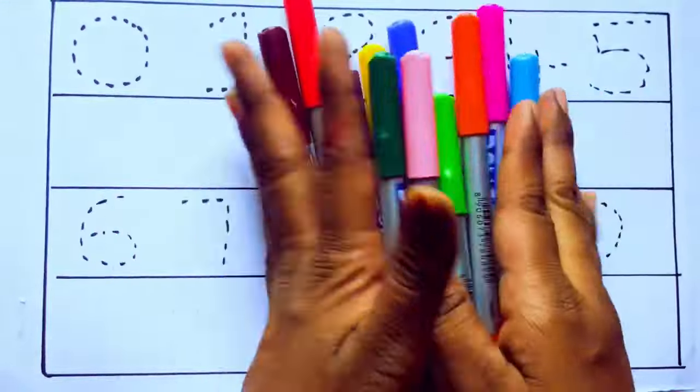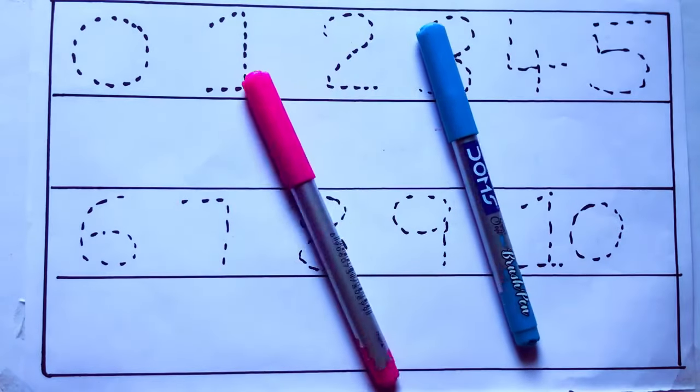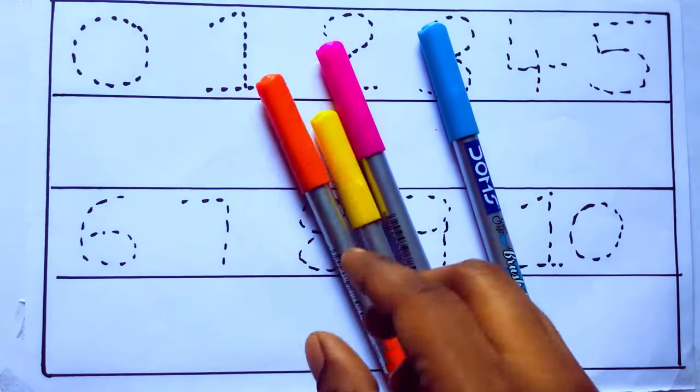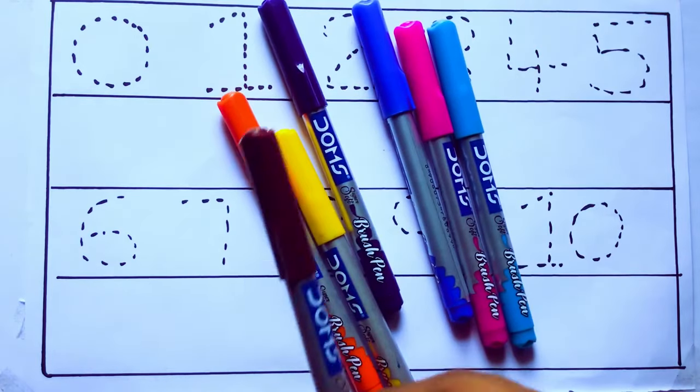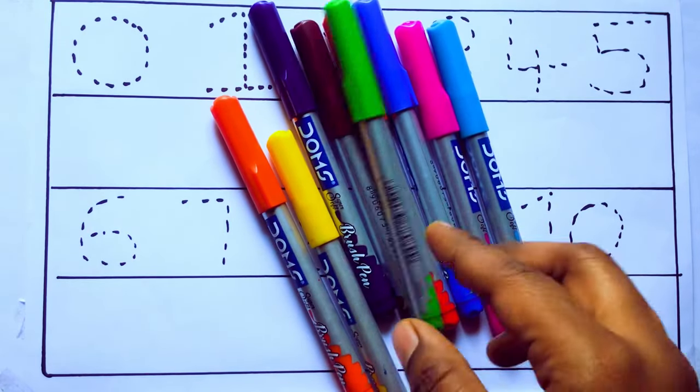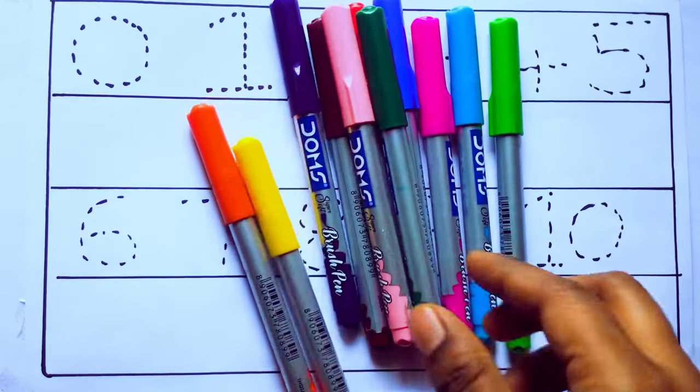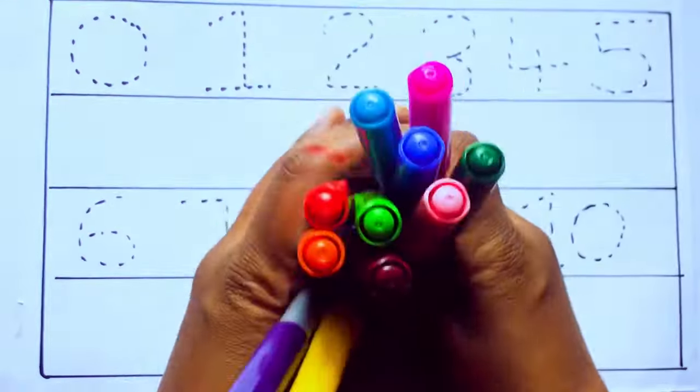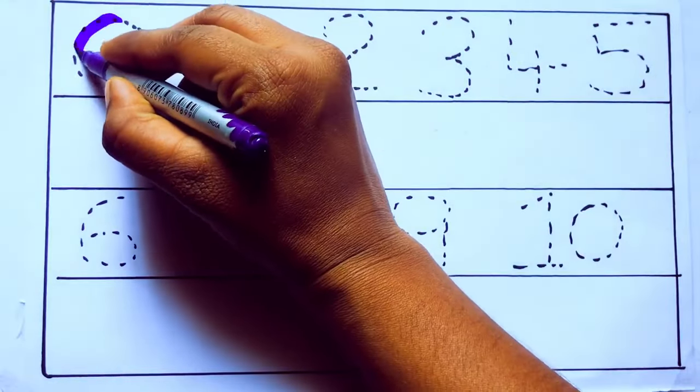Let's learn some colors. These are all the color pencils. Let's learn the names: sky blue color, pink color, yellow color, orange color, violet color, blue color, brown color, red color, green color, blue green color, and pink color. Let's draw numbers. Violet color.